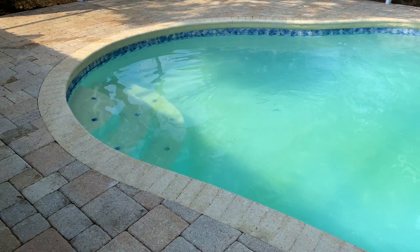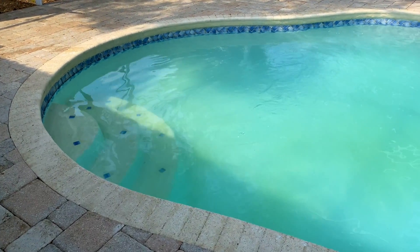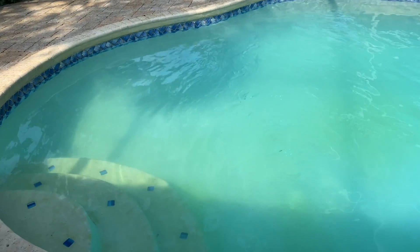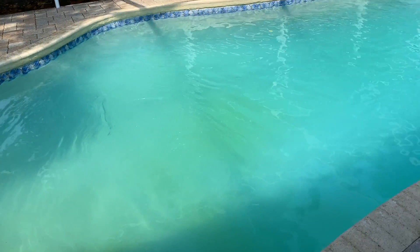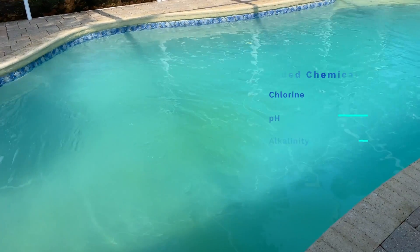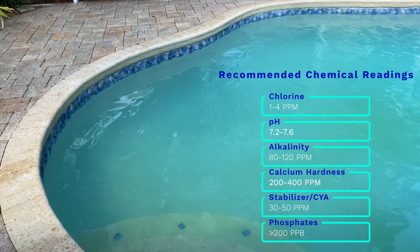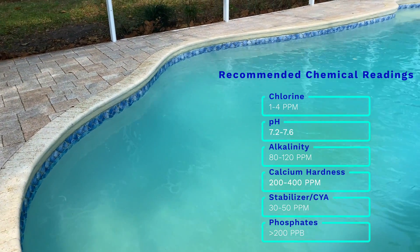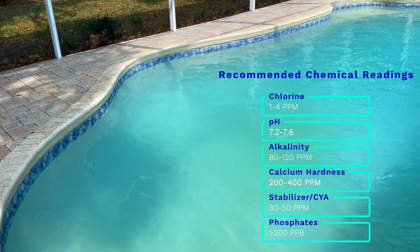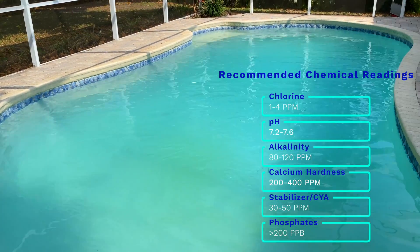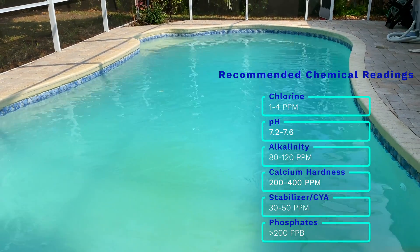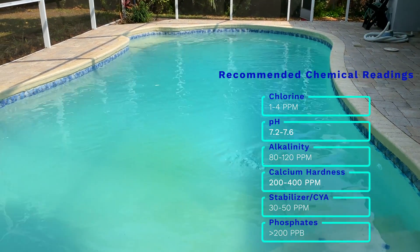When it comes to bad chemistry, there are a couple of parameters you really need to pay attention to when trying to eliminate algae growth or a green pool. The first one is your chlorine or sanitation level. You want to make sure your chlorine is high enough, because chlorine is what kills the algae. If you have a salt system, you want to make sure that your salt system is producing chlorine.